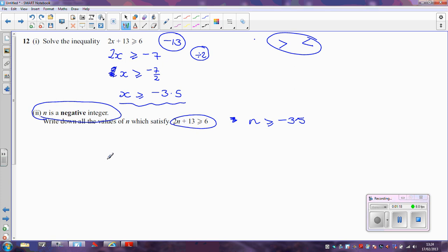It helps here to think of a number line I think. We've got 0 here, minus 1, minus 2, minus 3, and there's minus 4. So minus 3.5 is in between the two. So this inequality says that n has to be greater than or equal to minus 3.5.